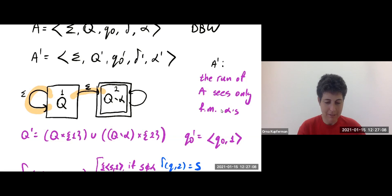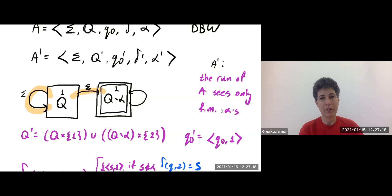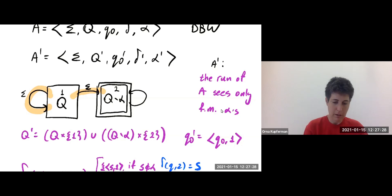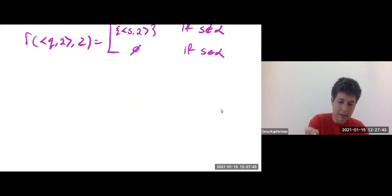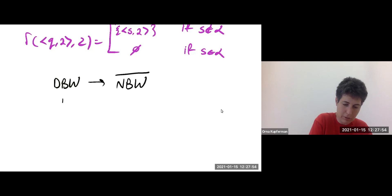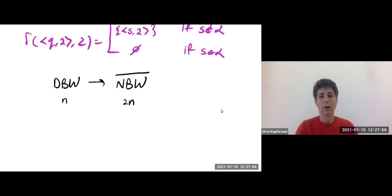Let's quickly see the two directions of the proof. If the word is not accepted by A, then its run stops visiting states in alpha eventually, and this is when A prime can jump to the second copy and stay forever and accept. The other way around, if A prime accepts the word, then eventually it jumps to the second copy where it stays forever, meaning it eventually stops visiting states in alpha. This construction is linear: if the DBW had n states, the resulting NBW will have at most 2n states — one full copy and one copy without the states in alpha.